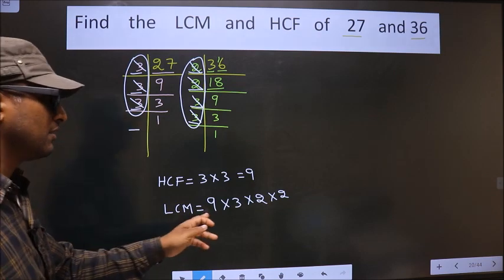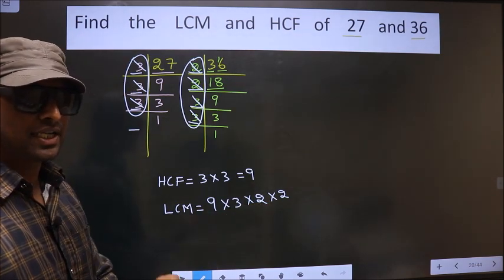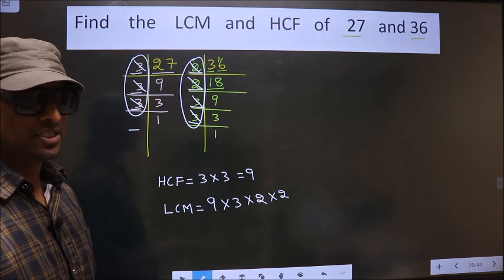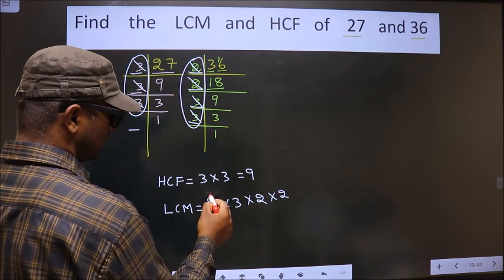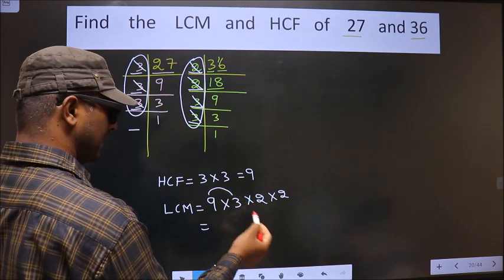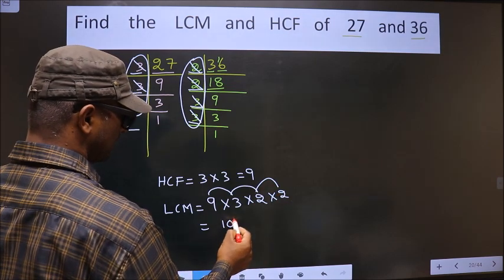Therefore, now you multiply these numbers, whatever number you get, that is your LCM. So let us multiply. That is 9 into 3, 27, into 2, 54, into 2, 108.